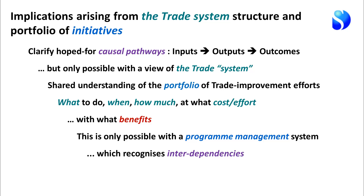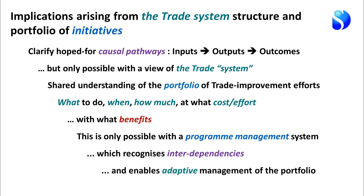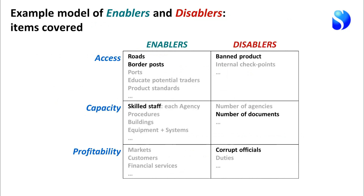From that shared understanding, we should be able to figure out what to do, when, how much, at what cost and effort, and anticipate the benefits likely to arise. We ought to be able to anticipate when a particular initiative runs the risk of being pointless because some other part of the system will stop the improvements it's intended to make. This requires a programme management system that recognises interdependencies between initiatives and their impact on the system as a whole, enabling adaptive management of the portfolio.